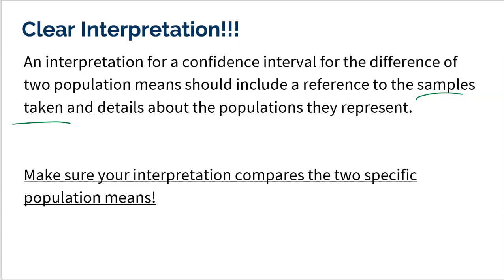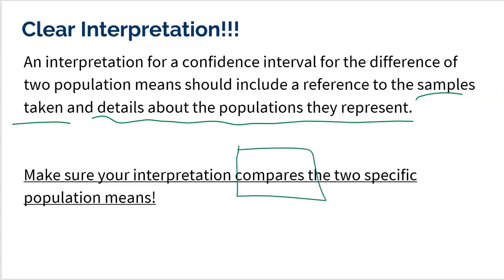You also have to give details about the population — and I'm begging that you compare. Make sure your interpretation compares the two specific population means you're looking at. When we talk about comparing, use words like more than, greater than, less than, smaller, bigger, above, lower. Don't just inform — compare.